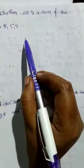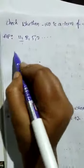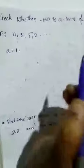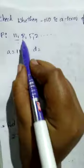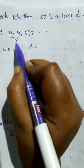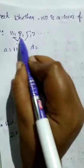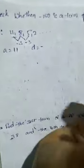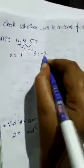Check whether minus 150 is a part of the AP, given A is equal to 11 and D is equal to 8 minus 11 equals minus 3, 5 minus 8 equals minus 3, common difference is minus 3.